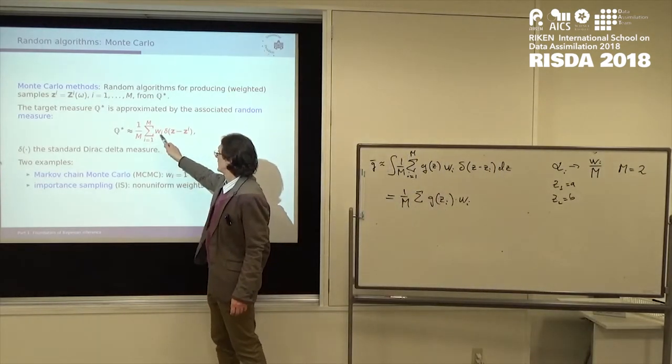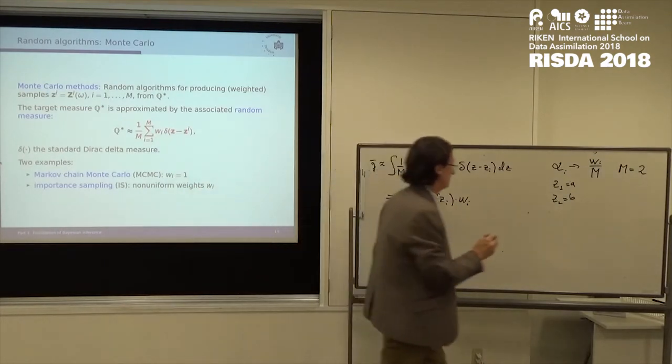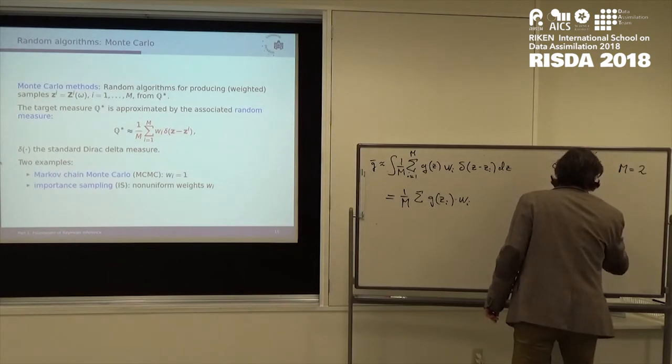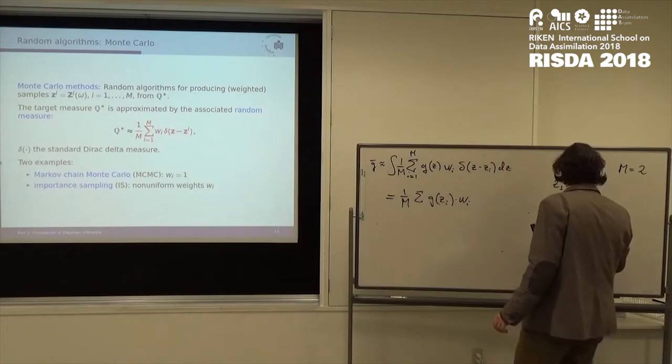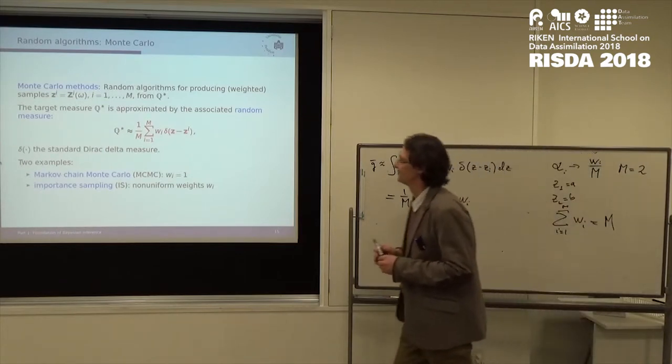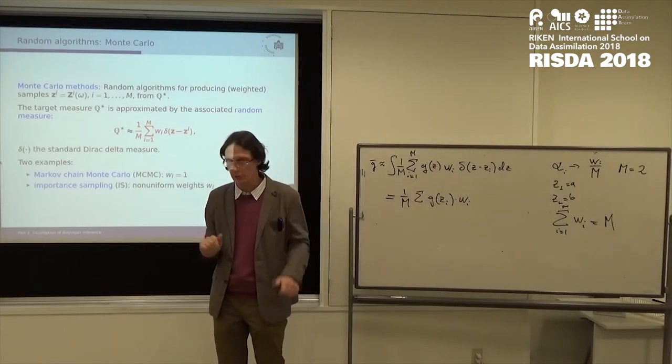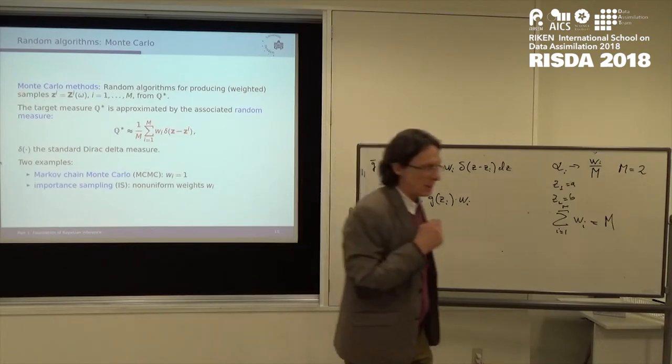And so the main thing is, in the way I chose it here, that these W's have to sum to 1. Have to sum to M, sorry, because I normalize. All right, so it's just quadrature rules, random quadrature rules.